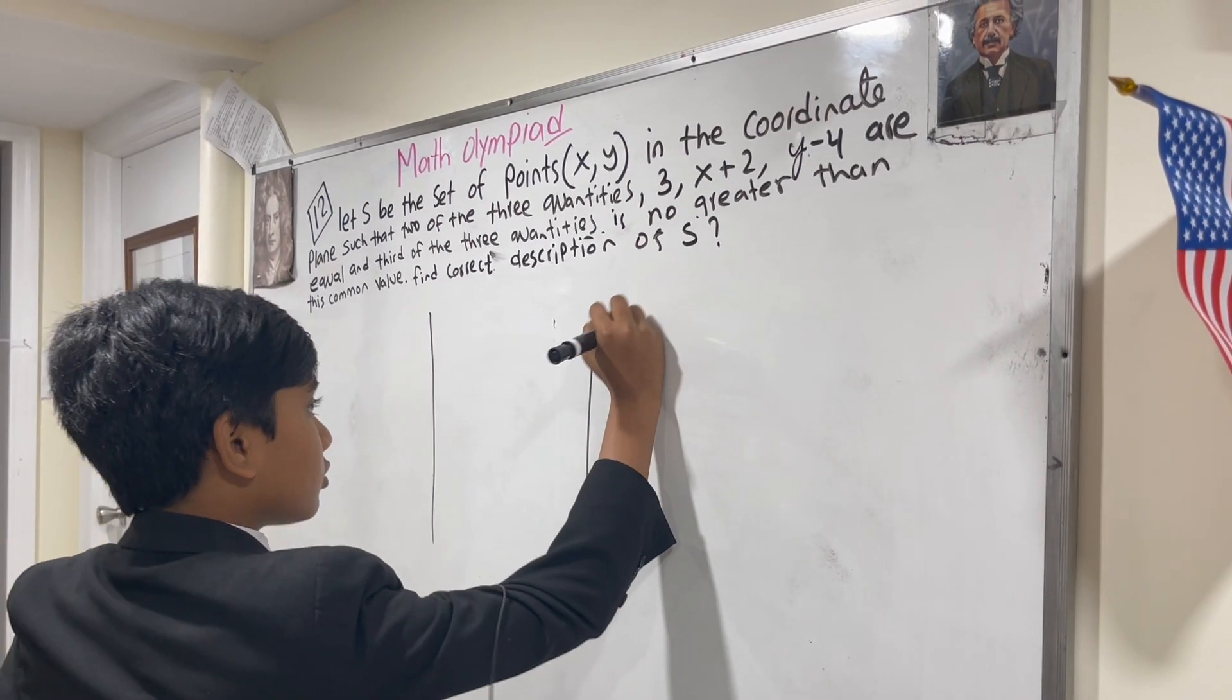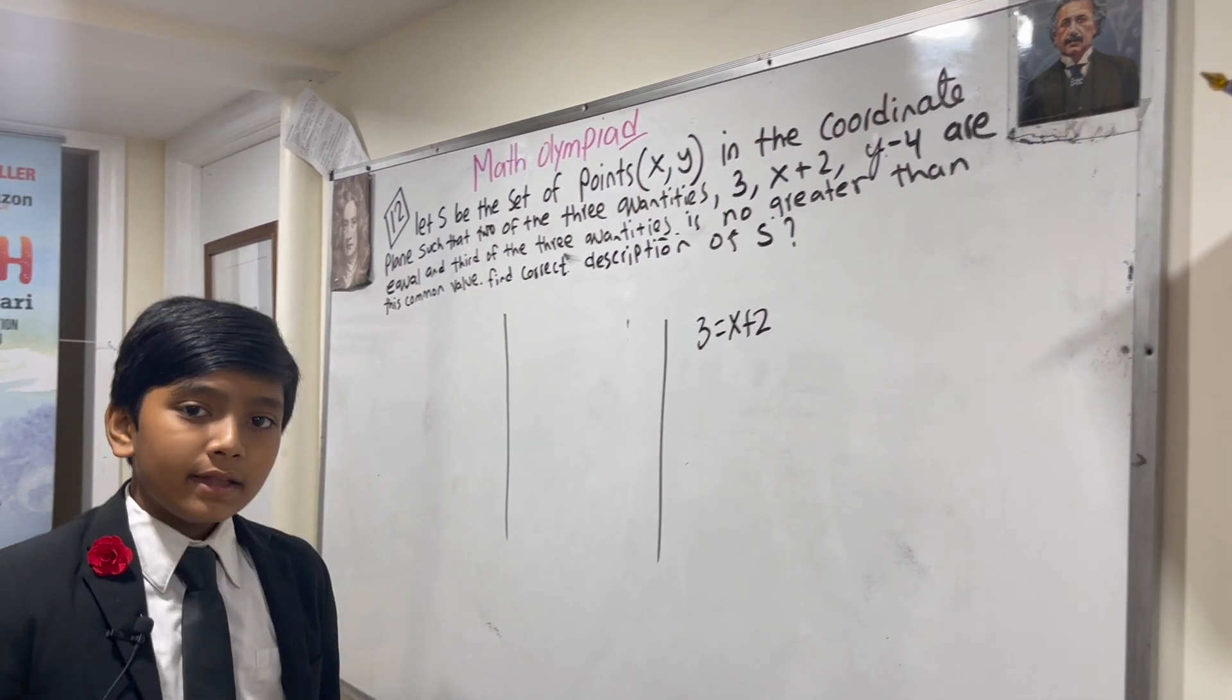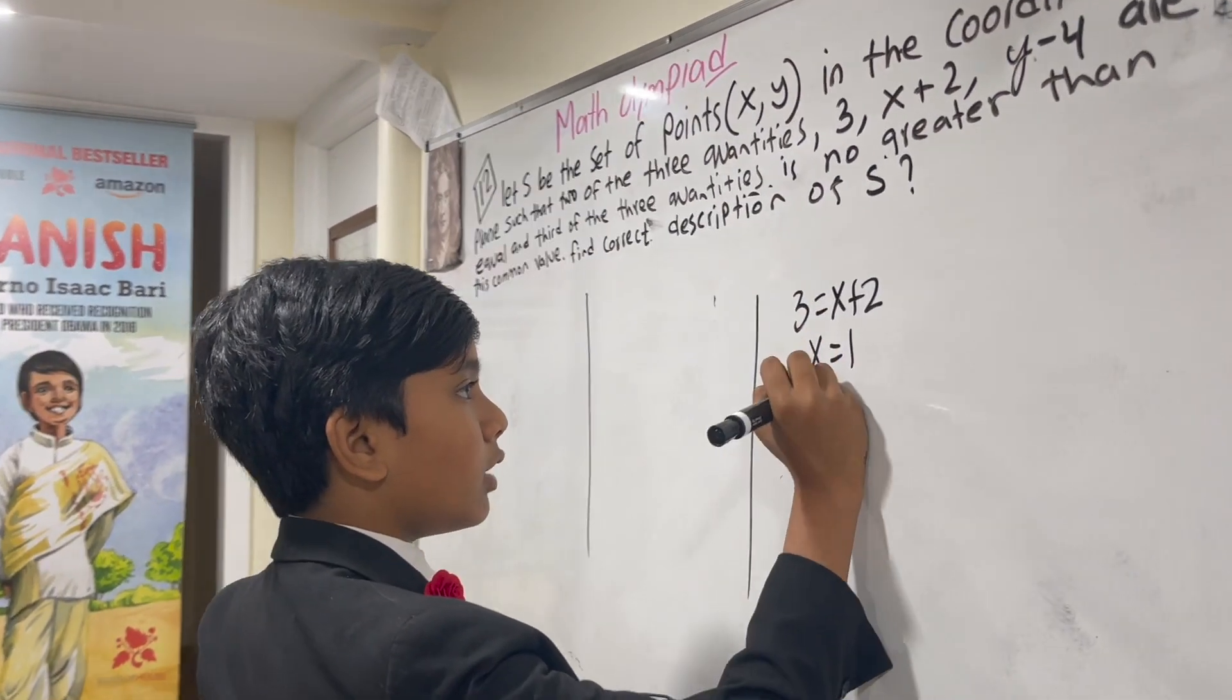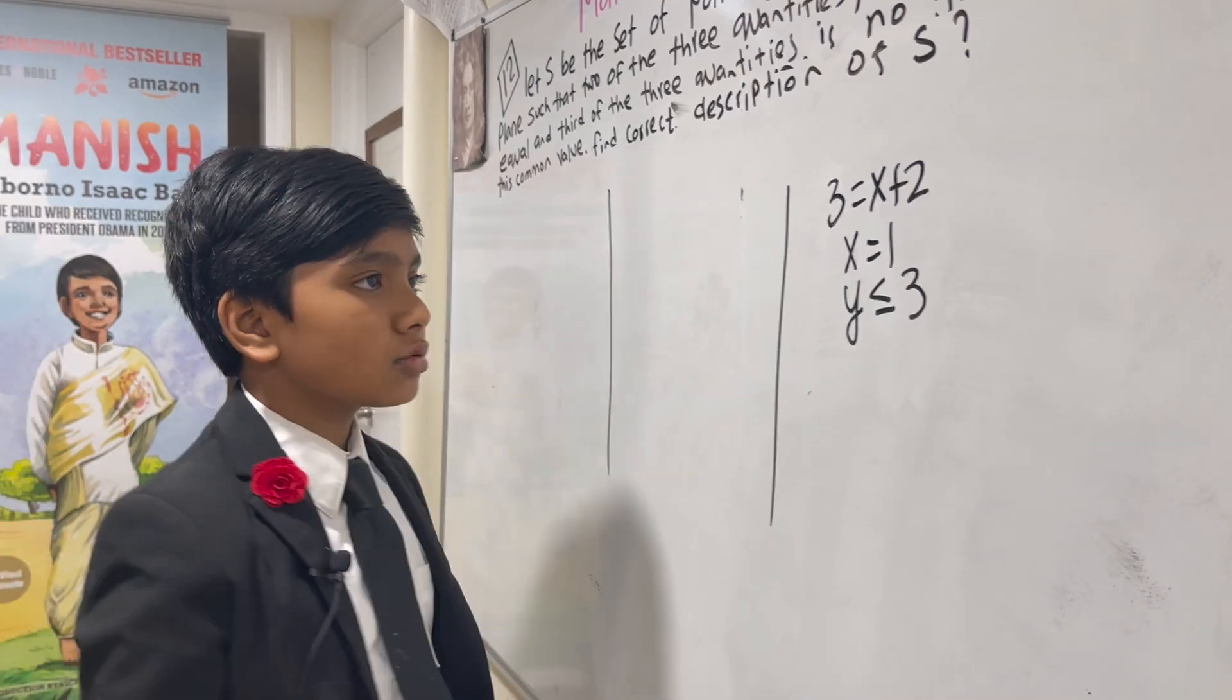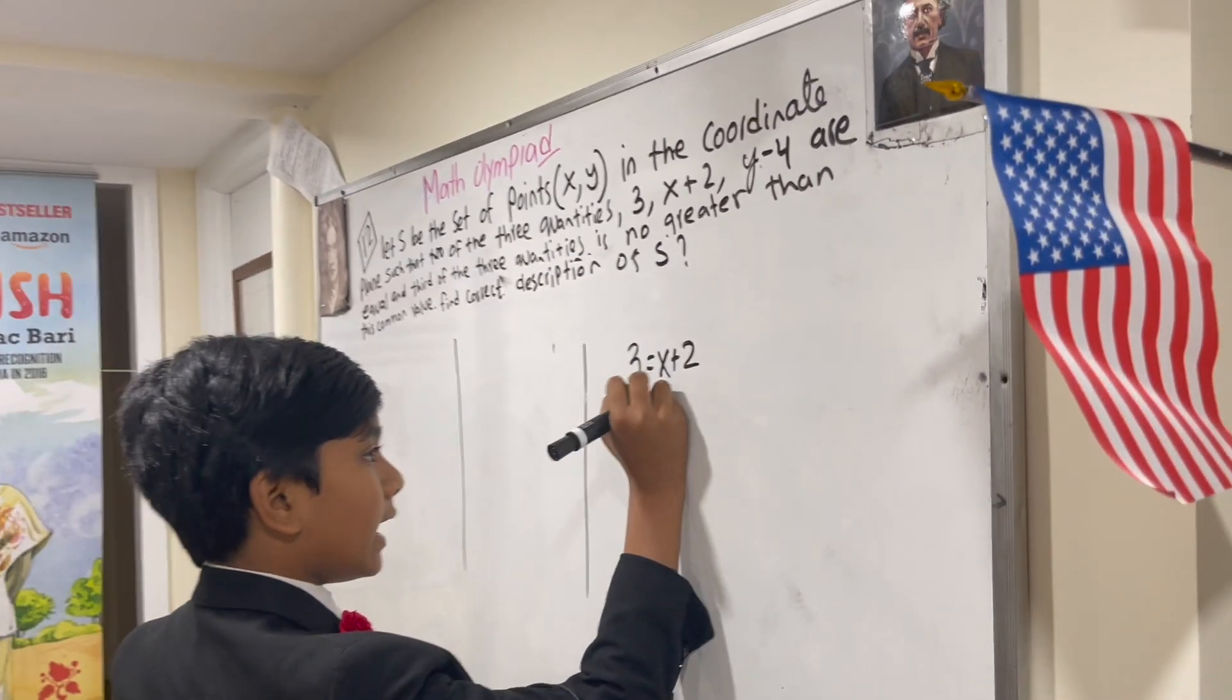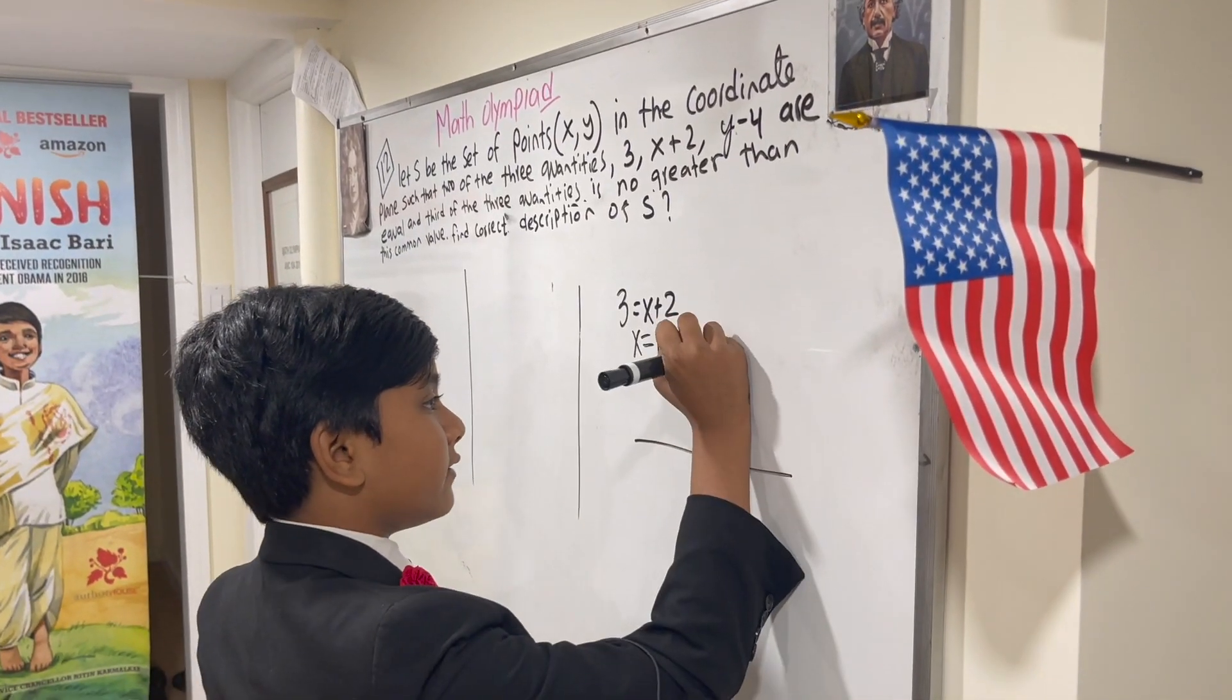First scenario: 3 equals x plus 2. Okay, now this is pretty easy. This means that x is equal to 1, and y is less than or equal to 3. That means x equals 1, which I'm going to draw on this graph - is this line.